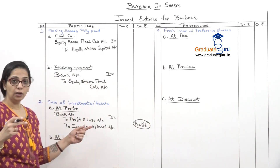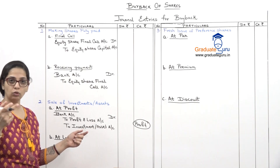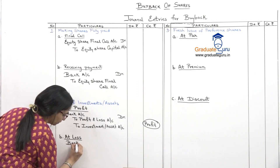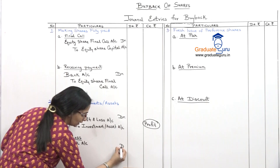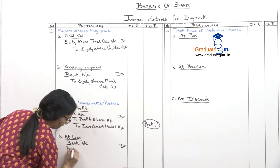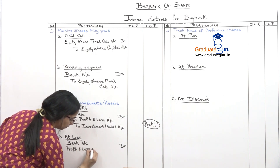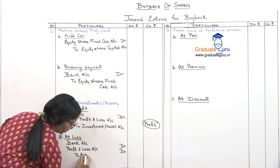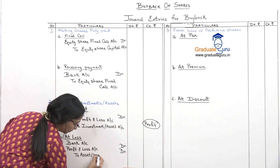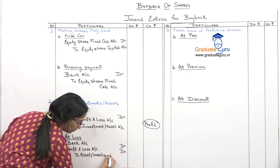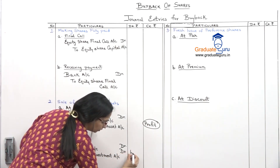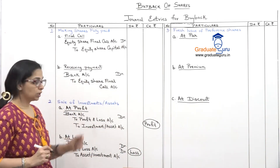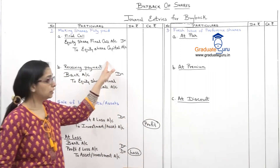And when you sell it at a loss, the only difference will be that now your Profit and Loss Account will get debited. So the entry is: Bank Account — Debit, Profit and Loss Account — Debit, and To Asset or Investment Account — Credit, because that will go out. That debit to P&L will reflect your loss on sale. So this covers sale of assets and making the shares fully paid.